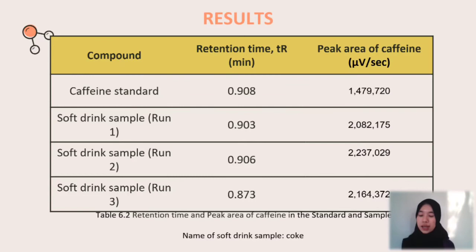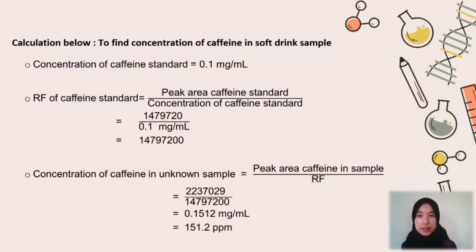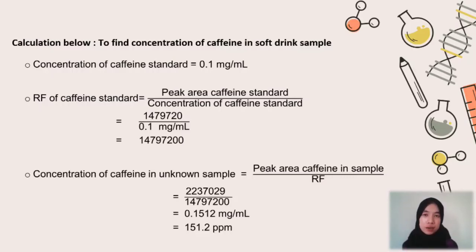This is the result of the HPLC experiment. The soft drink sample used is Coke. This is the calculation to find the concentration of caffeine in the soft drink sample. First, we find the concentration of caffeine standard, which is 0.1 mg/mL. Next, we find the RF value of caffeine standard by dividing the peak area of caffeine standard by the concentration of caffeine standard. Then, we find the concentration of caffeine in the unknown sample by dividing the peak area of caffeine in the sample by the RF value. The total concentration of caffeine in the soft drink sample obtained is 151.2 ppm.